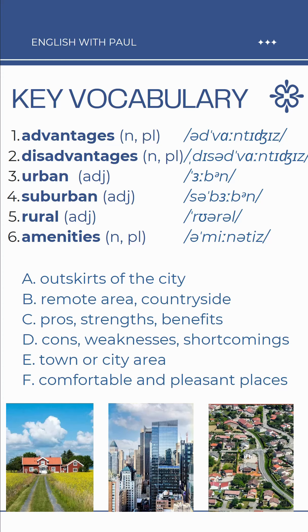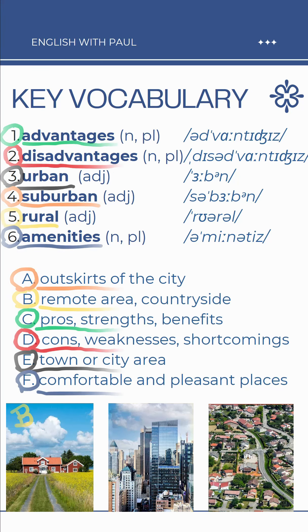And another way of checking the meaning. Match the words 1 to 6 with their explanations or synonyms A to F. Here are the answers. Are yours the same as mine?